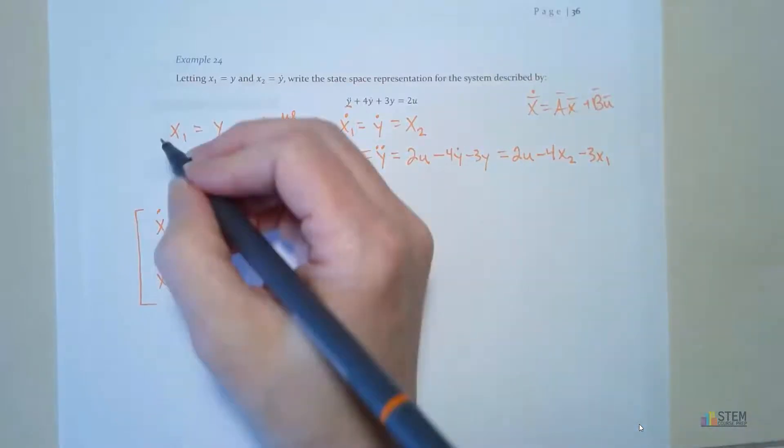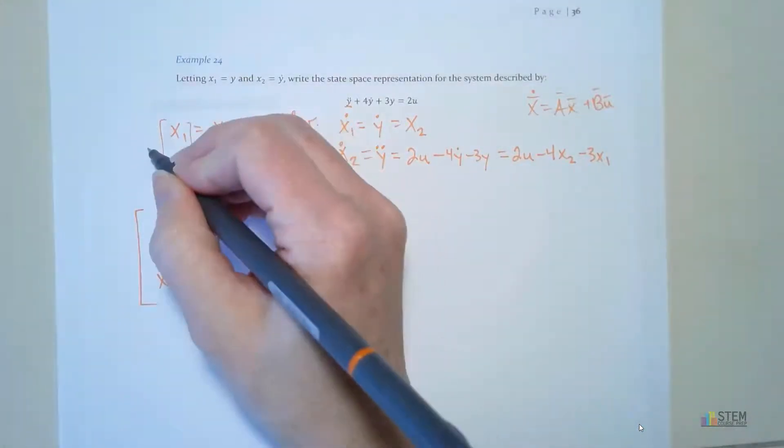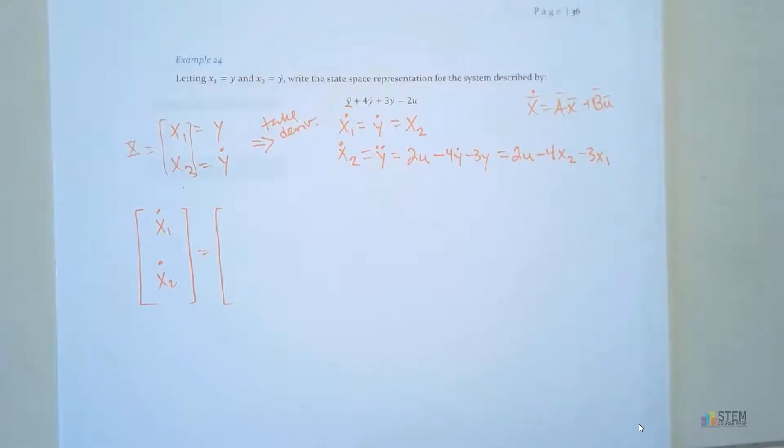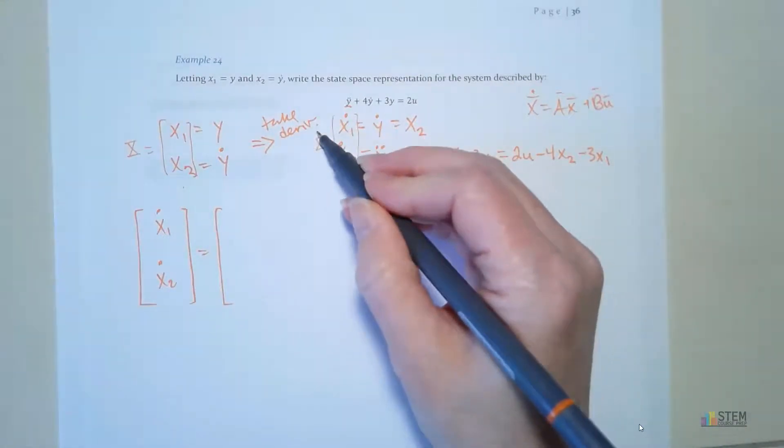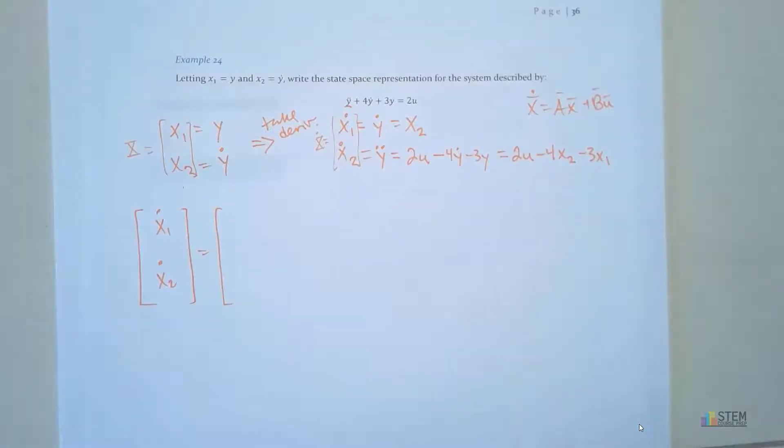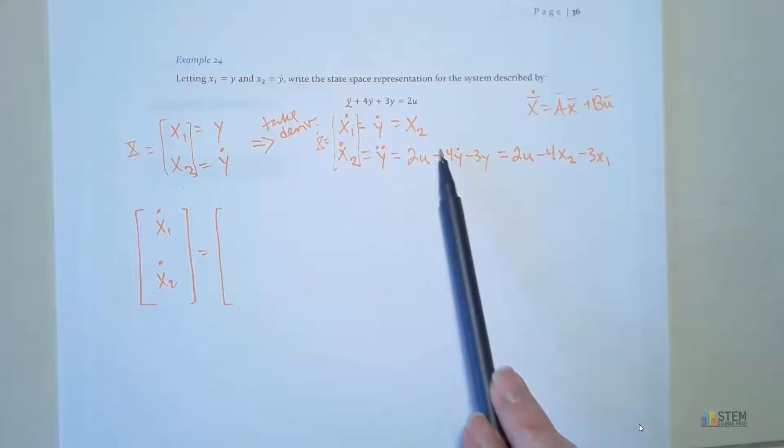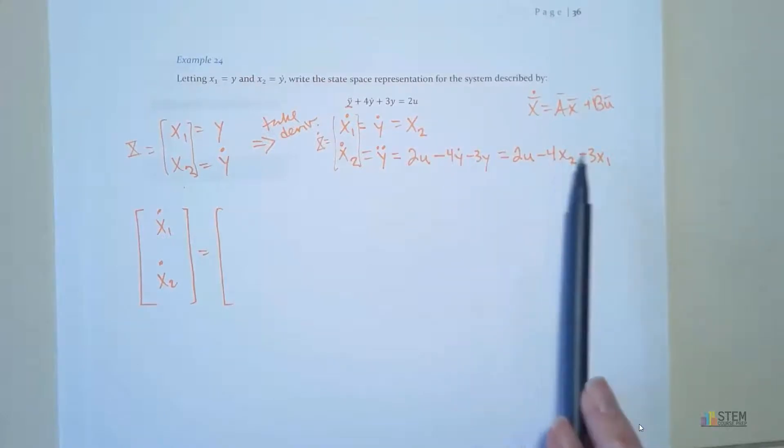So here's our x dot. Because this right here was x. So that means this here is x dot. Now let's do matrix A. So notice what this looks like. It's a matrix A times our state vector. Well, this was the state vector. So basically, we're just going to pull out the coefficients to these x values.